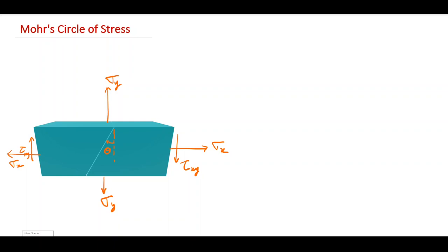In the case of biaxial stress and shear stress conditions, we have a complex system of stresses on an element. We want to find out the normal stress and shear stress on a plane making angle theta. We have two methods: one is the analytical method, which we have already discussed. This lecture is regarding the graphical method.